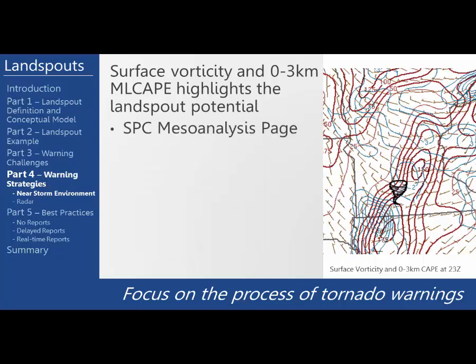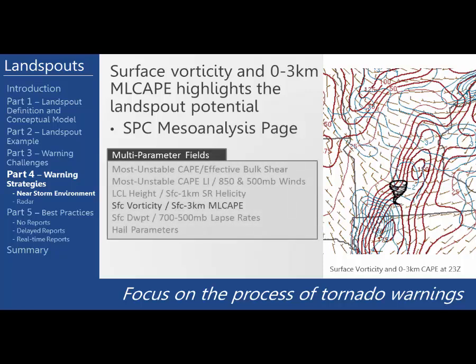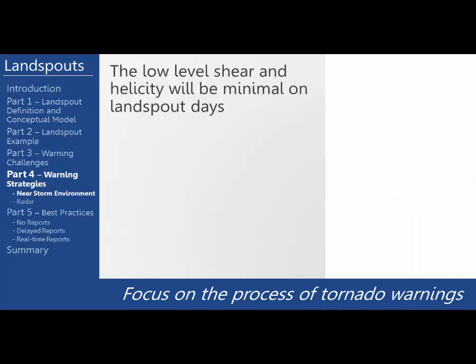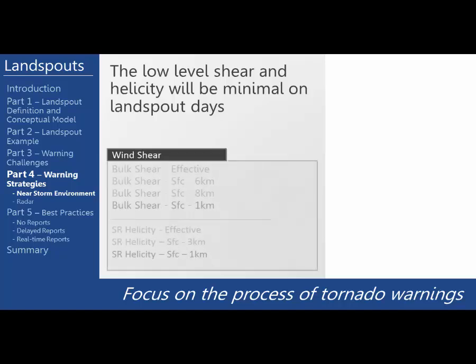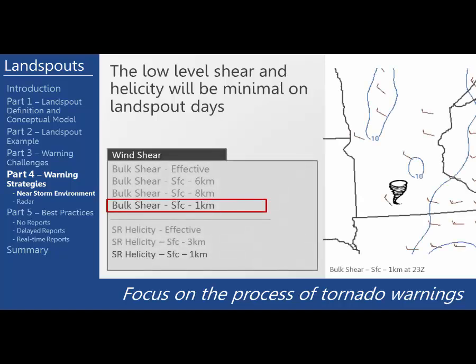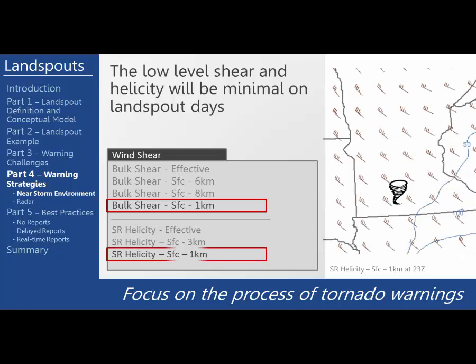To find the surface vorticity and zero to three kilometer mixed layer CAPE on the SPC mesoanalysis page, scroll over to the multi-parameter fields and in the drop-down box, click surface vorticity and surface to three kilometer CAPE. Since these are not supercell thunderstorms, the typical SPC mesoanalysis fields used for supercell tornadoes will be rather benign. For example, the low-level shear and helicity may be minimal on non-mesocyclone landspout days. The surface to one kilometer bulk shear was less than 10 knots and surface to one kilometer storm relative helicity was less than 50 — this is common during most landspout days.